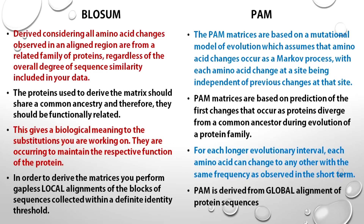The PAM matrices are based on scoring all amino acid positions in related sequences, whereas the BLOSSOM matrices are based on substitutions in conserved positional blocks, which represent the most alike common regions in related sequences. The PAM model is thus designed to track the evolutionary origin of proteins, whereas the BLOSSOM model is designed to find their conserved domains.